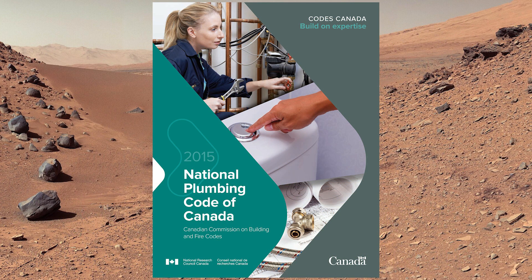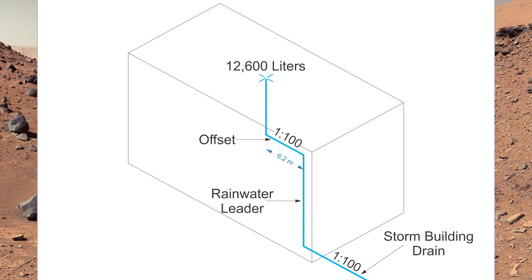Code references will be made from the National Plumbing Code of Canada, 2015 edition. If we look at this picture, we're going to notice we have an offset just underneath the roof, and you would think — does that affect the system? Well, according to the code, it does.